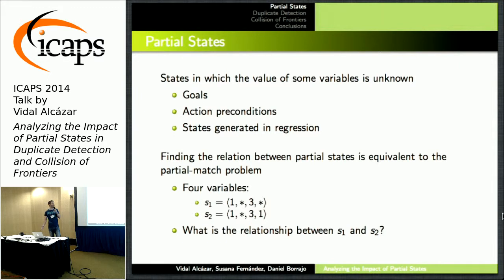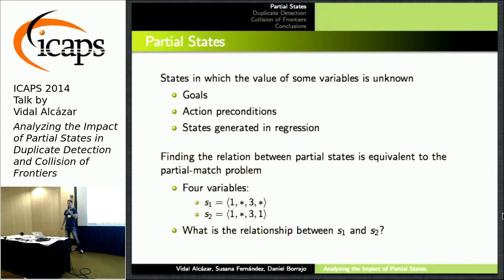In case you don't know, partial states are states in which there are some values that are unknown. For example, the goal definition is usually a partial state, and the conditions of actions are partial states too.